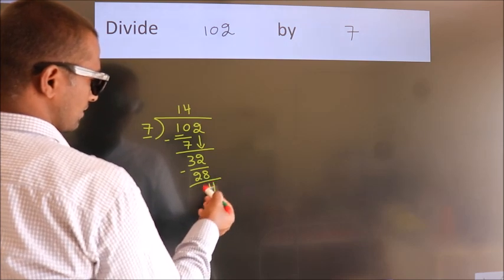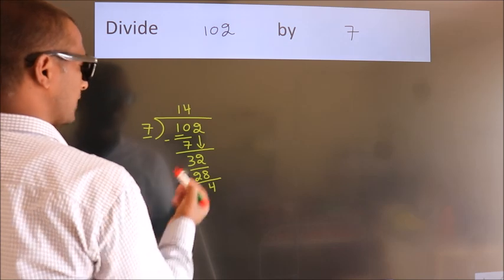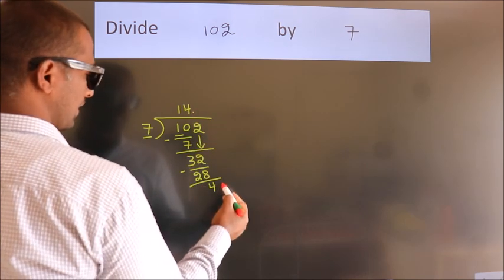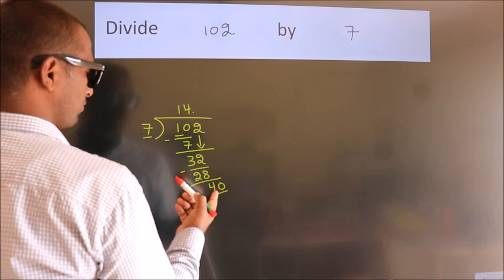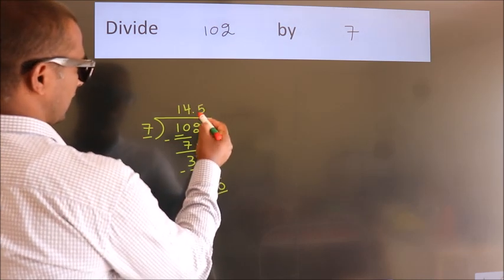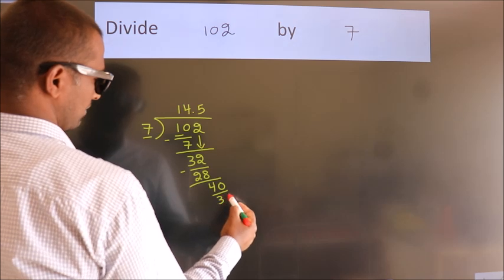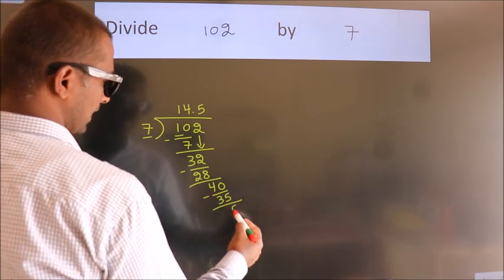After this, there are no more numbers to bring down. So what we do is put a dot and take 0, giving us 40. A number close to 40 in the 7 table is 7 fives 35. Now we subtract and get 5.